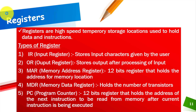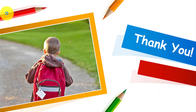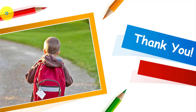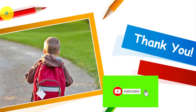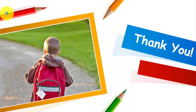The program counter tells the computer that instruction A is now being executed and the next instruction to be executed is B. When B is being executed, it holds the address of the next instruction C. That is the role of the program counter. That's all about system unit. If you have any questions you can ask in the comment section. Please subscribe to the channel and click the bell icon to get more informative videos in future. Thank you and have a great day.